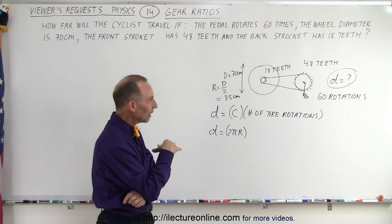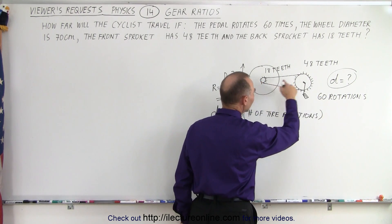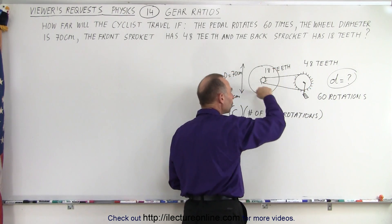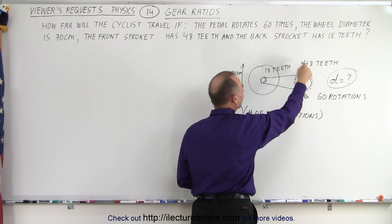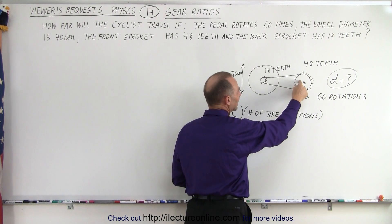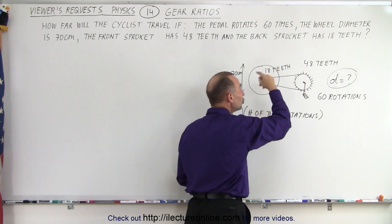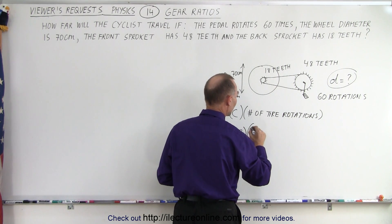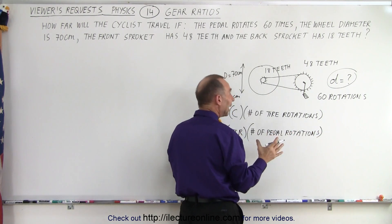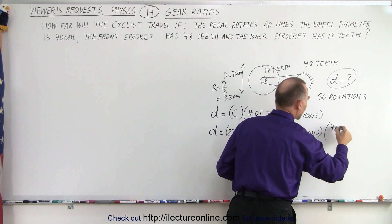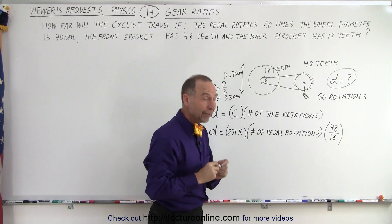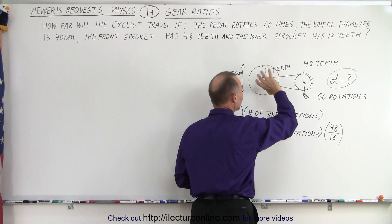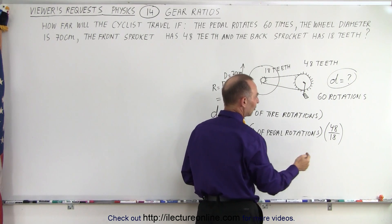Now the number of tire rotations will depend upon the number of pedal rotations and the gear ratio. Notice if this has a smaller sprocket, then for every one rotation here we'll have more rotations there — in the ratio of the number of teeth here versus the number of teeth there. If there are twice as many teeth here as there, then for every one pedal rotation there will be two tire rotations. So it's proportional to the ratio of the number of teeth. We multiply by the number of pedal rotations and the ratio of teeth, which is 48 divided by 18. That gives us a greater number of times the tire will go around — if there are more teeth on the front sprocket than the back, there will be more rotations of the wheel.